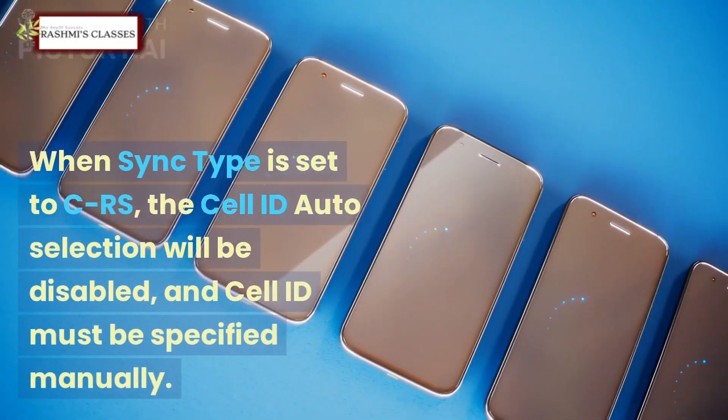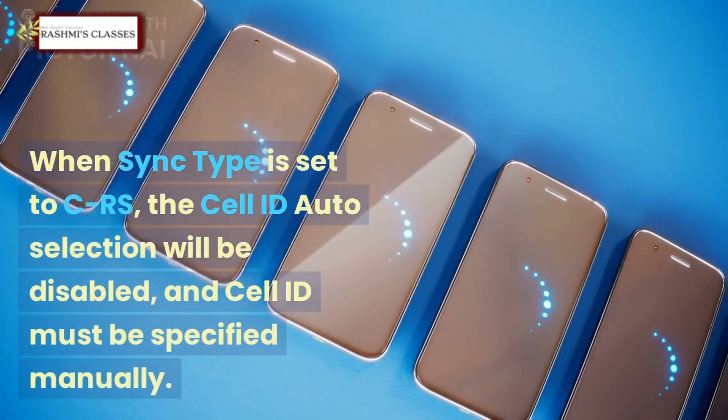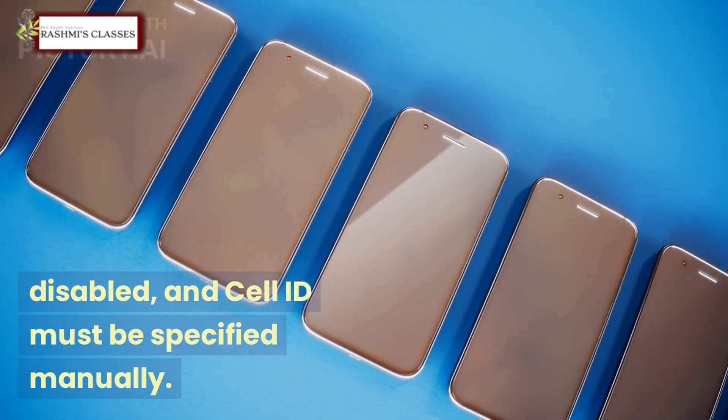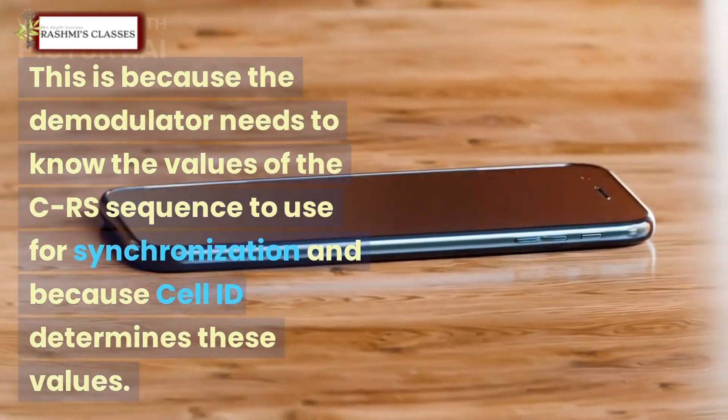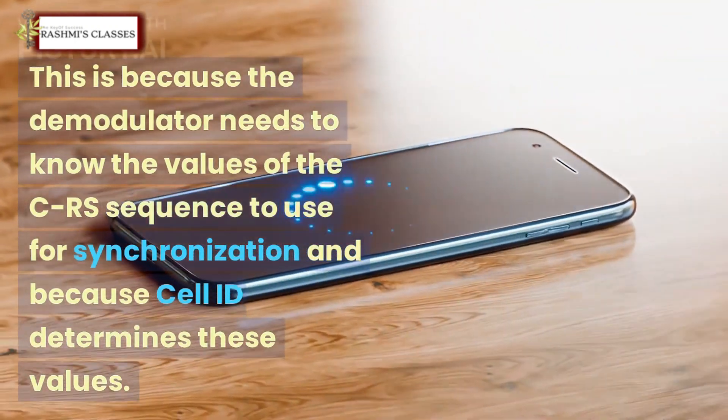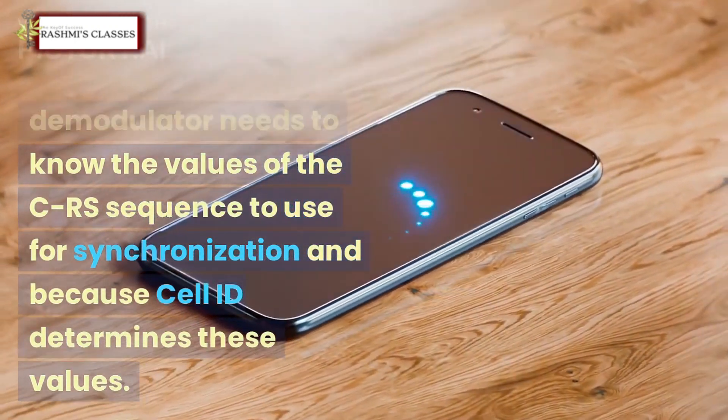When sync type is set to CRS, the cell ID auto selection will be disabled and cell ID must be specified manually. This is because the demodulator needs to know the values of the CRS sequence to use for synchronization, and because your cell ID determines these values.